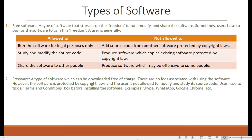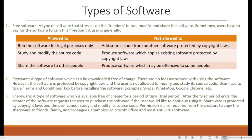Users have to tick a terms and conditions box before installing freeware. Examples include Skype, WhatsApp, Google Chrome, etc. Shareware: a type of software which is available free of charge for a period of time, known as a trial period. After the trial period ends, the creator requests the user to purchase the software to continue using it. Shareware is protected by copyright laws, and the user cannot study and modify its source code. Permission is also required from the creators to copy and share the shareware to friends, family, and colleagues. Examples include Microsoft Office and most antivirus software.